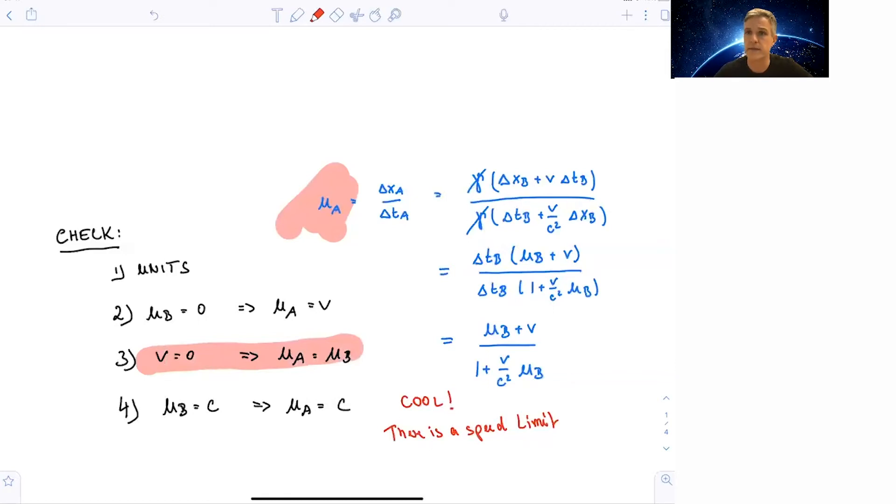Lastly, if instead of having an escape rocket, we send a beam of light out which has speed of light, uB equal to c, we find that the velocity observed by Alice is also c, which brings us to an interesting point here. Yes, we still add velocities with a little bit of a relativistic correction, but we will never get larger velocities than the speed of light. So the speed of light is an absolute speed limit.